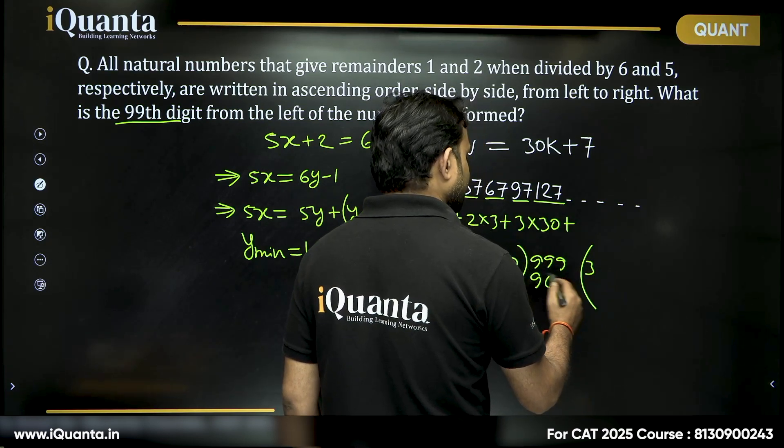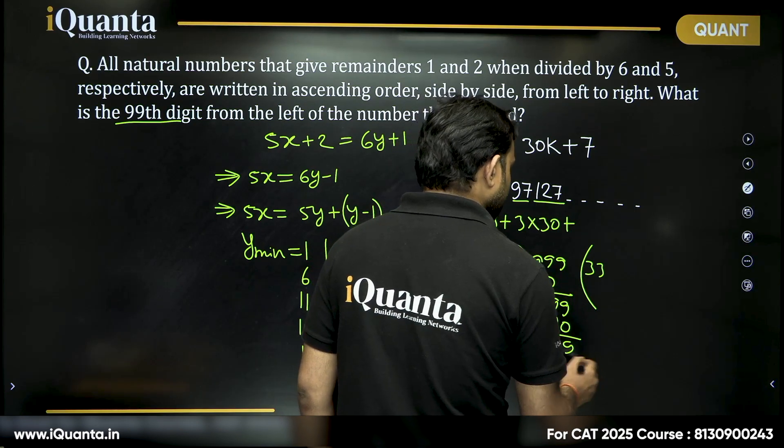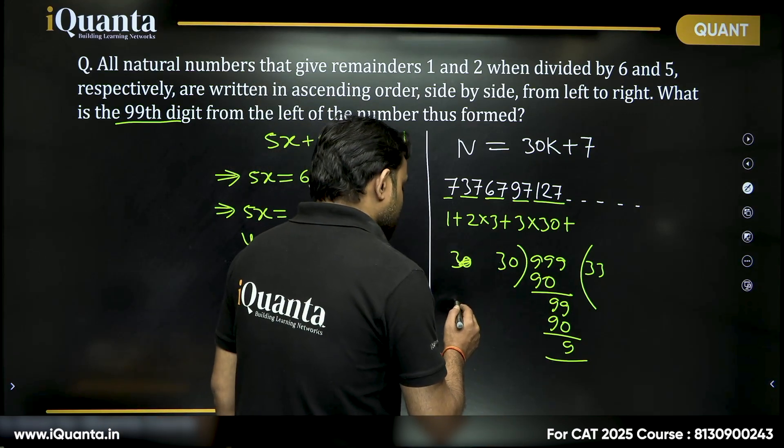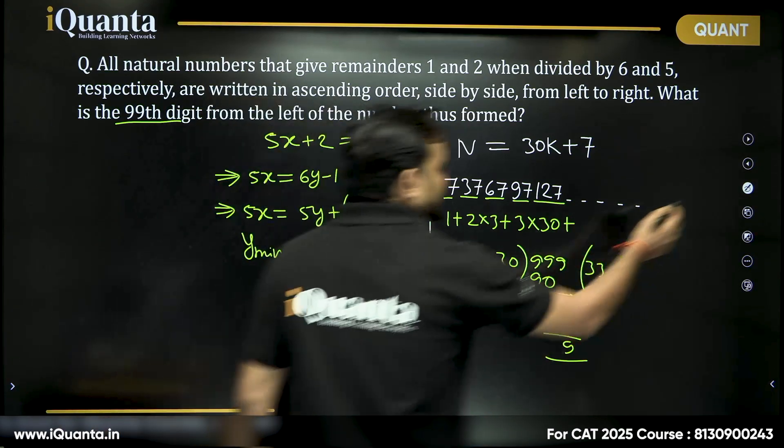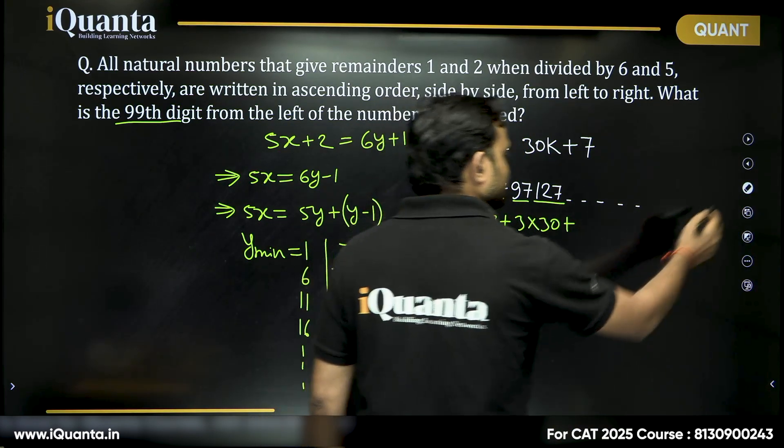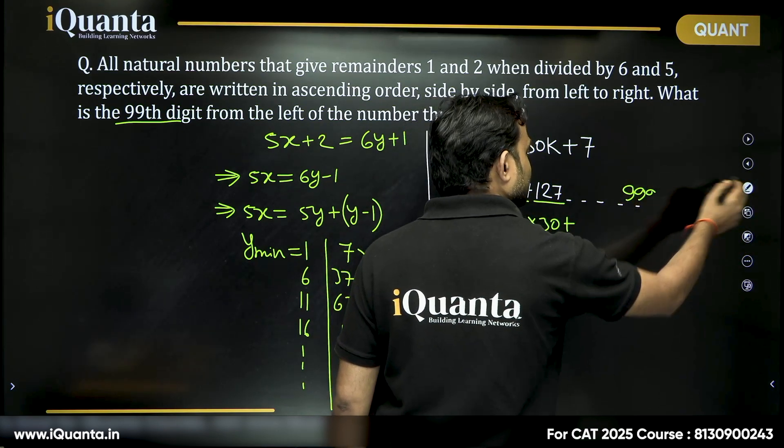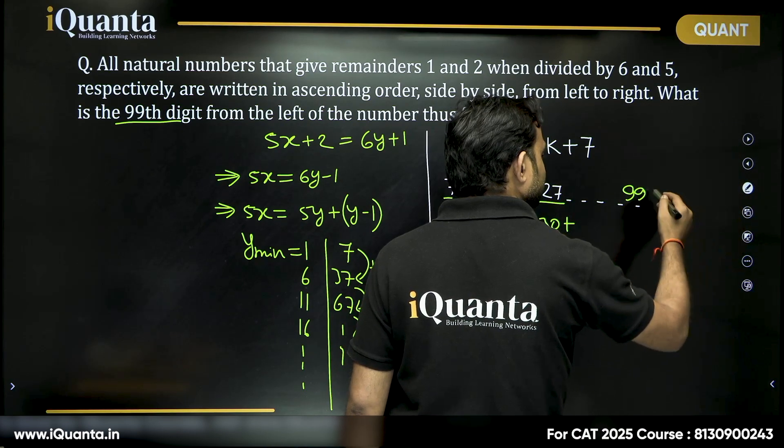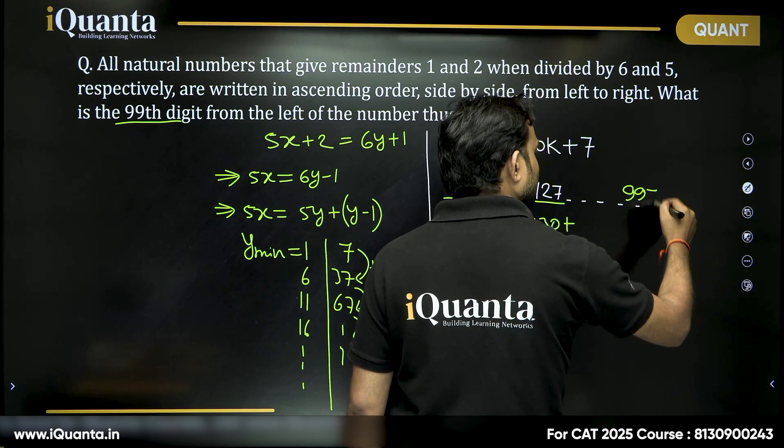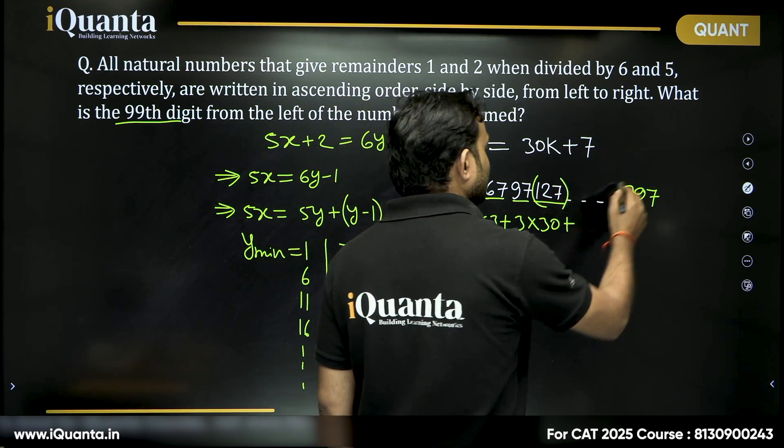So what we can say that 30k, if you divide 999 by 30, what are we getting? 3 times 90, then again 99, 3 times 90, then we are getting 9. The remainder is 9 when we are dividing 999 by 30. So the largest 3-digit number will be 997.